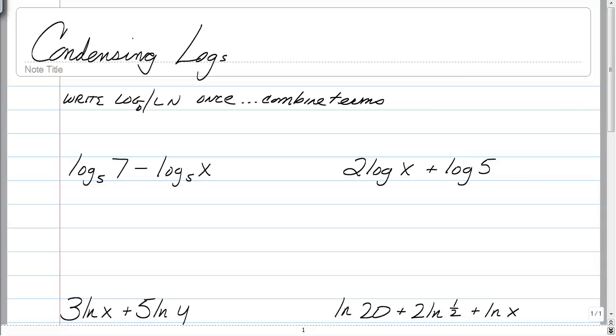It's time to condense some logs. In the last video, you learned how to expand them. Well, condensing them means we're going to take something bigger and make it smaller. To do that, you're going to write log or ln once. That's it. Do not write it any more than that or you will start losing points right off the bat.